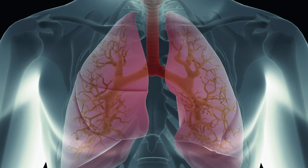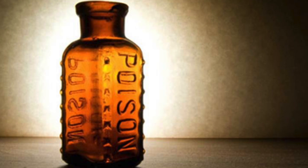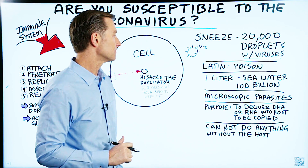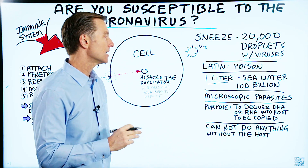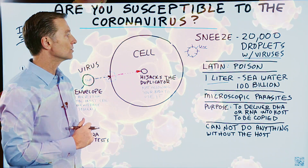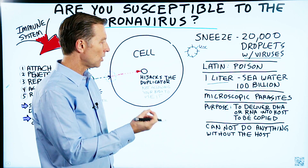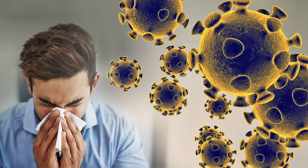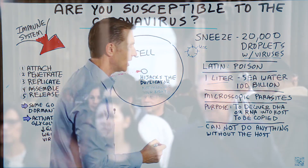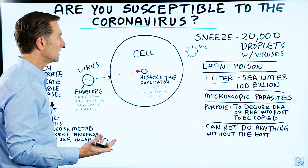The coronavirus is going to go into the lungs and do its purpose. The Latin word for virus means poison. Viruses are everywhere — these biological entities are more abundant than any other entity on this planet. Just one liter of seawater contains over 100 billion viruses. So it really has to do with whether you are susceptible to the virus. The purpose of a virus is to deliver its DNA or RNA into the host cell to be copied so it can continue. Viruses can't do anything without the host — so they're not really alive, not really dead, but they have the potential to act alive and create a lot of damage.